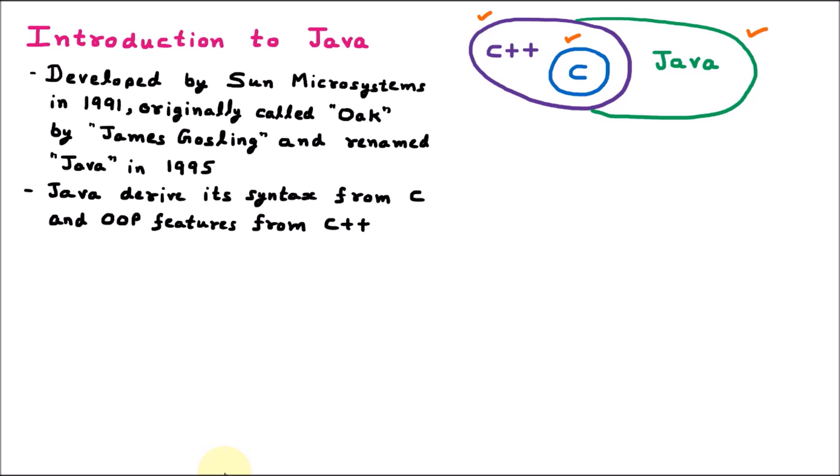In object-oriented programming, we have four features. The first feature is abstraction. Abstraction means hiding the data. When we are hiding the unnecessary data from the user, that is called abstraction. Let's say we are using Facebook — it has likes, maybe 1 million likes. But where those likes are stored, what is that variable, where the likes are storing — the user is not aware about that. So that is the data hiding which comes from abstraction.